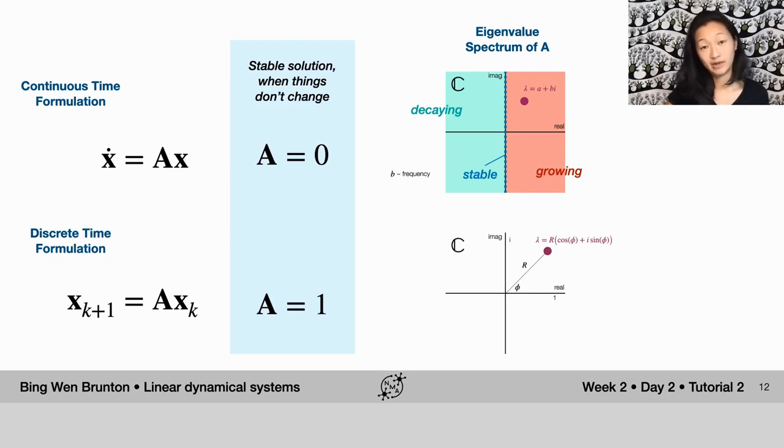If you're looking at the discrete time formulation and the eigenvalue spectrum of A in the discrete time formulation, things look a little bit different. Instead of looking at the left half plane or the right half plane, we're actually looking at whether inside or outside the unit circle.